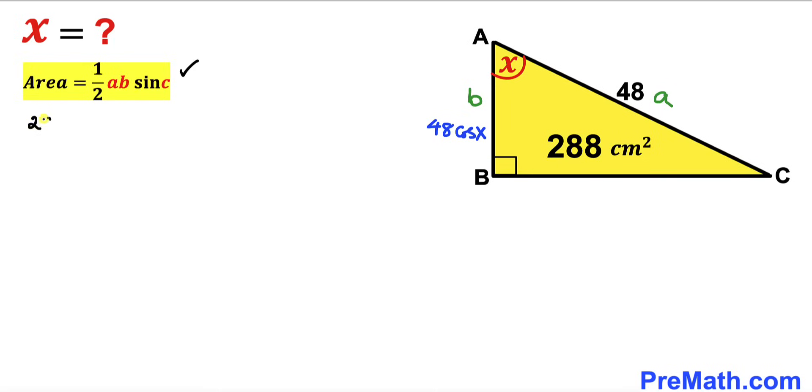Area in our case is 288 equals one-half times a, which in our case is 48, times b, which is 48 cosine X, times sine of angle X.